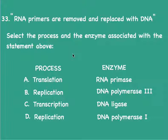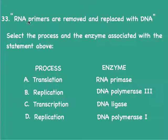RNA primers are removed and replaced with DNA. This statement is in reference to DNA replication in E. coli. Select the process and the enzyme associated with the statement. It is replication of DNA, and the enzyme DNA Polymerase I is responsible for replacing primers with DNA, whereas Polymerase III is responsible for the bulk of DNA replication itself. But Polymerase I is the one that replaces the primers with pieces of DNA. Answer D.